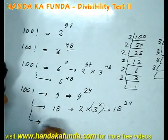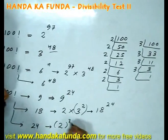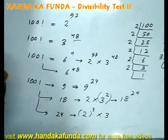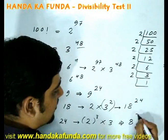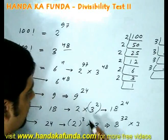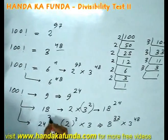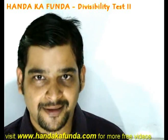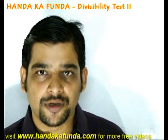How about the power of 24 in 100 factorial? 24 equals 2 cubed times 3. We look at both powers: for 2 cubed, the effective power is 97 divided by 3, which is 32; and the power of 3 is 48. The lesser of the two values is 32, so the highest power of 24 in 100 factorial is 32. That wraps up our session on divisibility tests — please stay tuned at Handa Ka Fanda to watch other videos on other chapters.